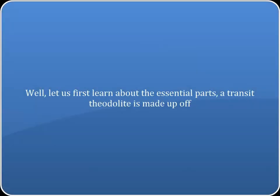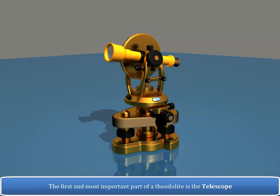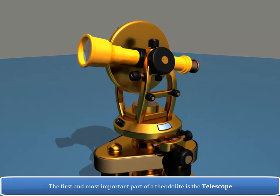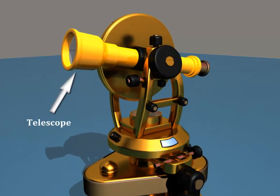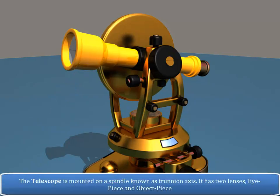Let us first learn about the essential parts a transit Theodolite is made up of. The first and most important part of a Theodolite is the telescope. The telescope is mounted on a spindle known as Trunnion axis. It has two lenses, eyepiece and object piece.